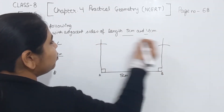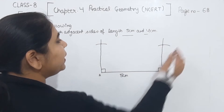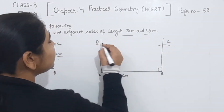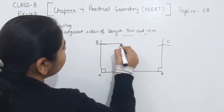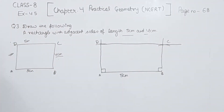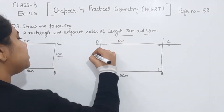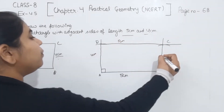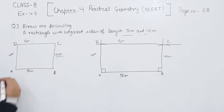Now these are the two points we are having — A, B, C, and D. So we are going to join C with D. This is the required rectangle we are having. This side is 5 cm, this one is also 5 cm, and the other two sides are 4 cm each.